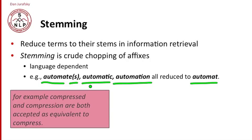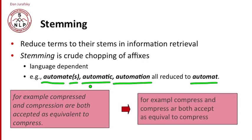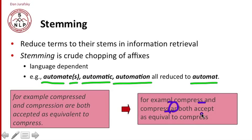Here's an example text: 'compressed and compression are both accepted as equivalent to compress.' If we stemmed that text, here's the resulting output. We've lost the 'e' on 'example,' and 'compressed' and 'compression' have both turned into 'compress.' Here we used R as our representation — we could have used B, but this particular example used R.